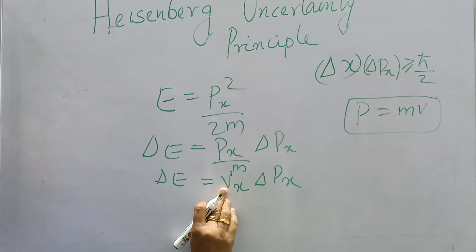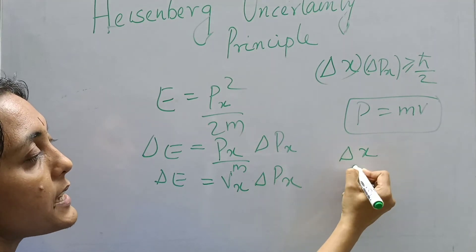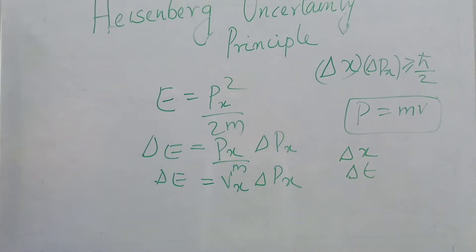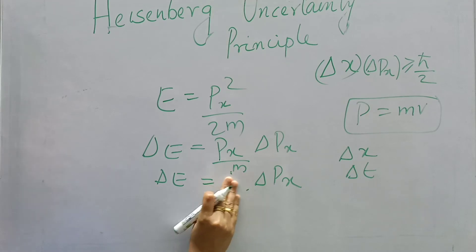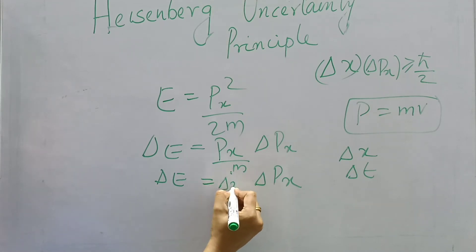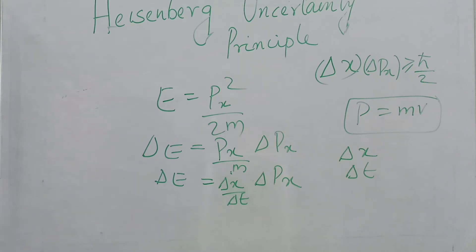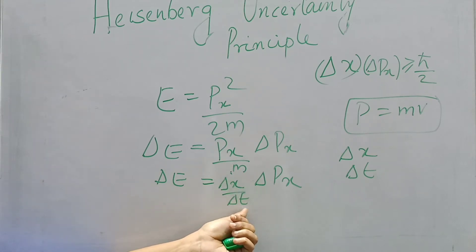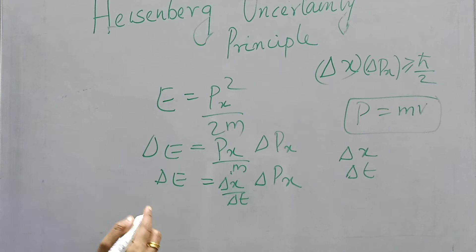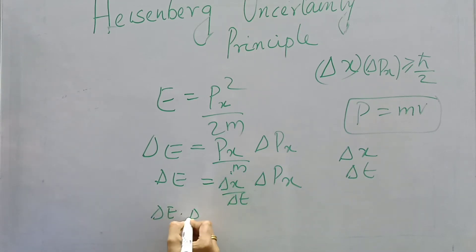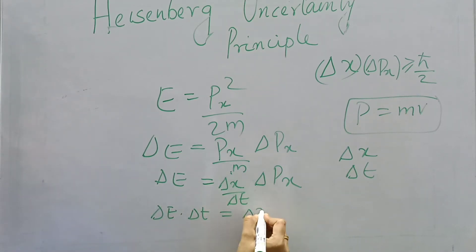The velocity vx can also be written as delta x by delta t — that is, change in position over change in time. That means we can write delta E into delta t is equal to delta x into delta px.